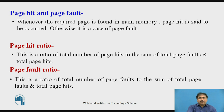To measure performance, we define two more terms: the page hit ratio and the page fault ratio. Page hit ratio is the number of page hits divided by the total of page faults and page hits. Whereas page fault ratio is the ratio of total number of page faults divided by the sum of total page faults and page hits.